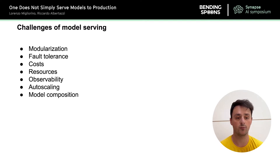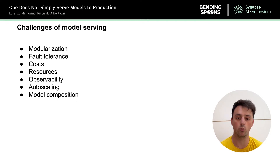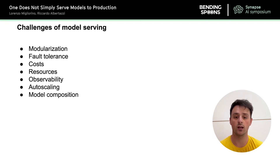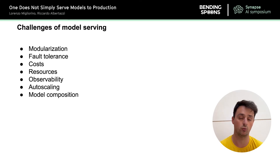A robust and optimized model serving tool has to solve several challenges — some of which come from building traditional software engineering tools and some of which are specifically related to an application that deals with machine learning models. I've reported some of them here and will explain quickly what they are, and then later explain how we solve them. First, modularization: we want to keep the machine learning code as agnostic as possible from the infrastructure, allowing AI researchers and engineers to focus as much as possible on the machine learning part without worrying about the environment on which that code will run.